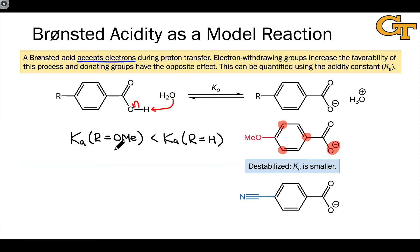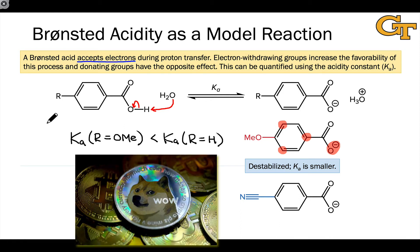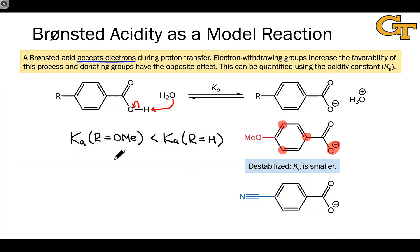When a substrate accepts electrons, an electron donating group is going to make it worse at doing that. I often think of a currency analogy here. If I'm supposed to be accepting money and I've already got a lot of money in the bank, I'm going to be less willing to do so. Please don't give me that gift. I'm already rich. I'm already electron rich. I don't need more electrons. And so Ka for the methoxy substituted benzoic acid is lower than Ka for simple benzoic acid.